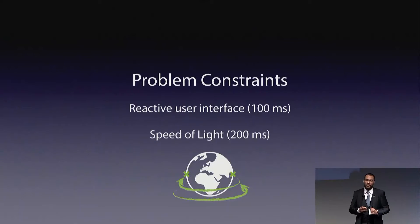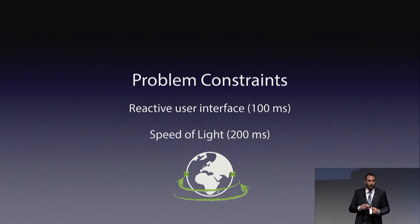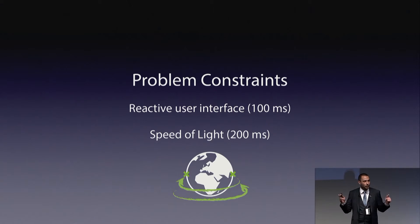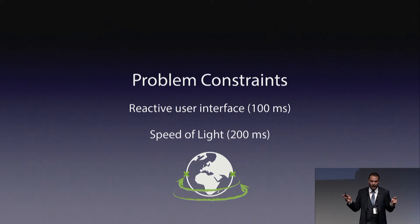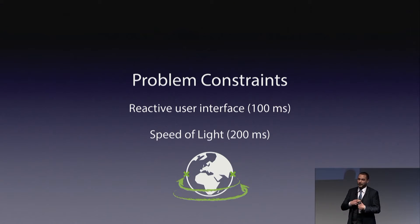Typically we want this to happen in around 100 milliseconds or less. Then we have a physical constraint: the speed of light. For information to flow back and forth between two opposite locations in the world, this is going to take around 200 milliseconds.